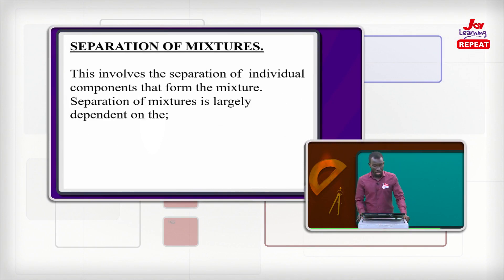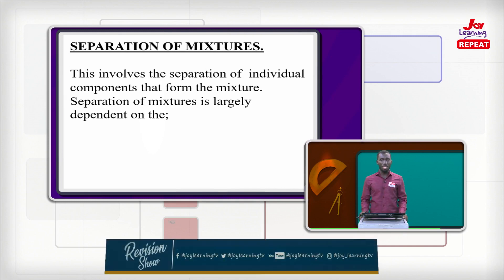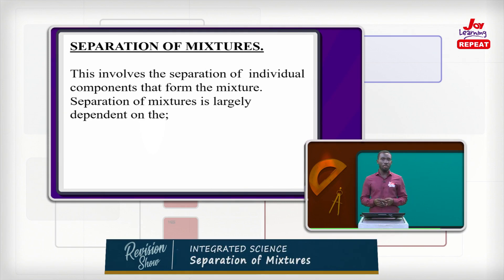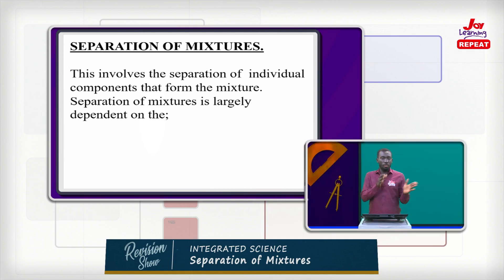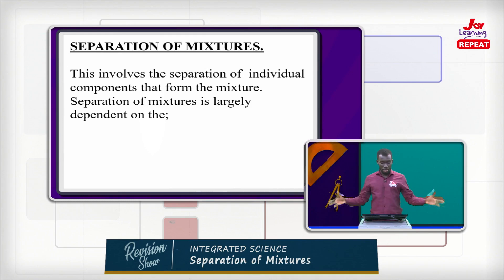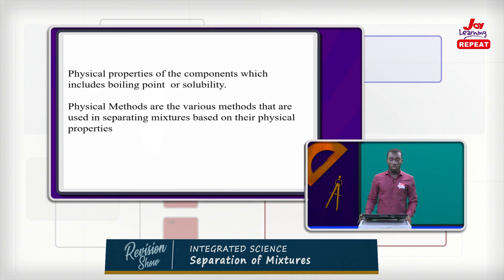Now let's try to find out what separation of mixtures itself is. This involves the separation of individual components that form the mixture. So it means that you have a mixture — you have a solute in there, you have a solvent in there. Whenever you talk about separation of mixtures, it's actually talking about how you're going to get a solute different from the solvent, or how you're going to get a different component of the solute or the solvent by itself.